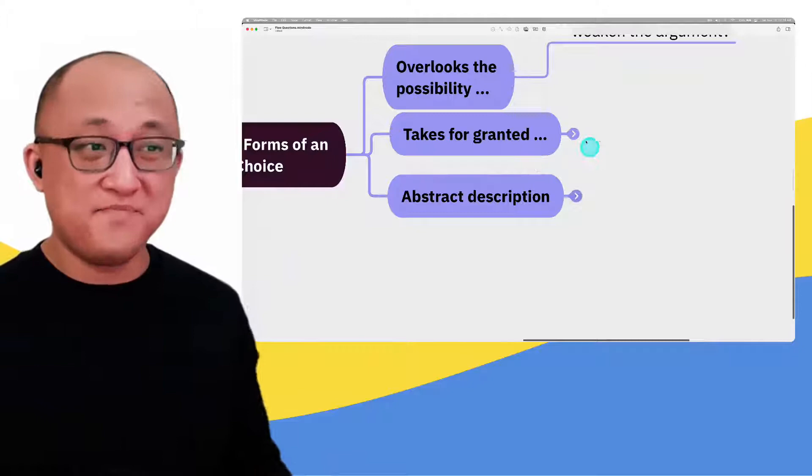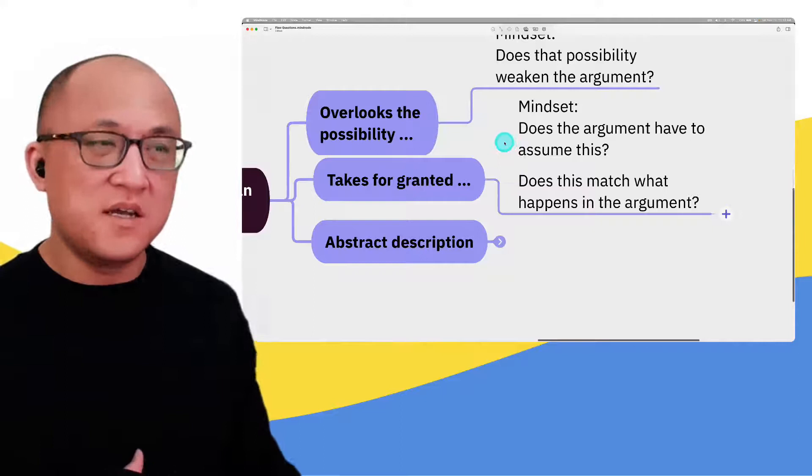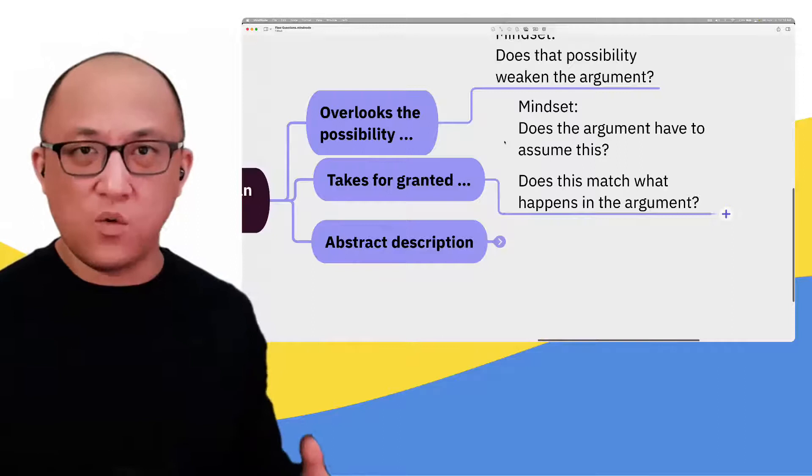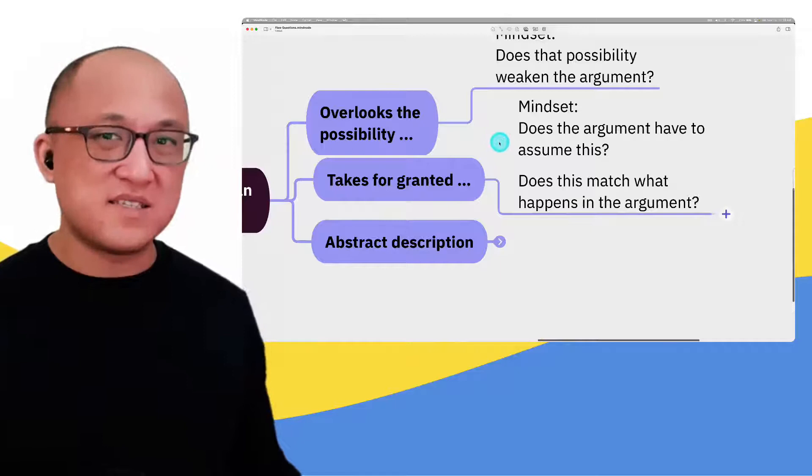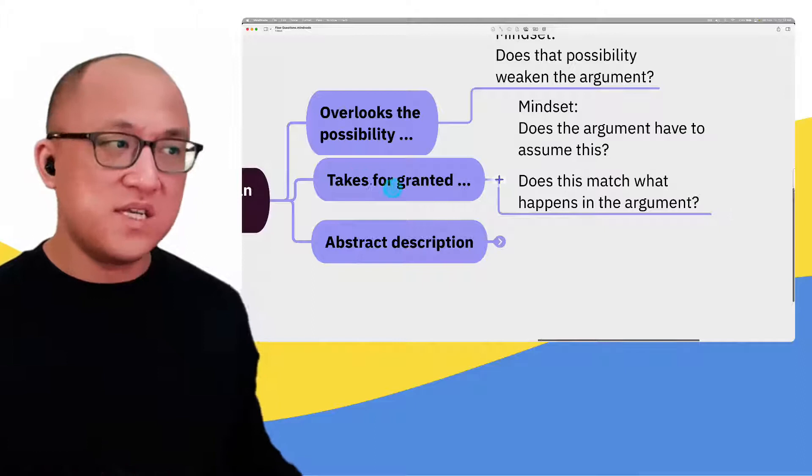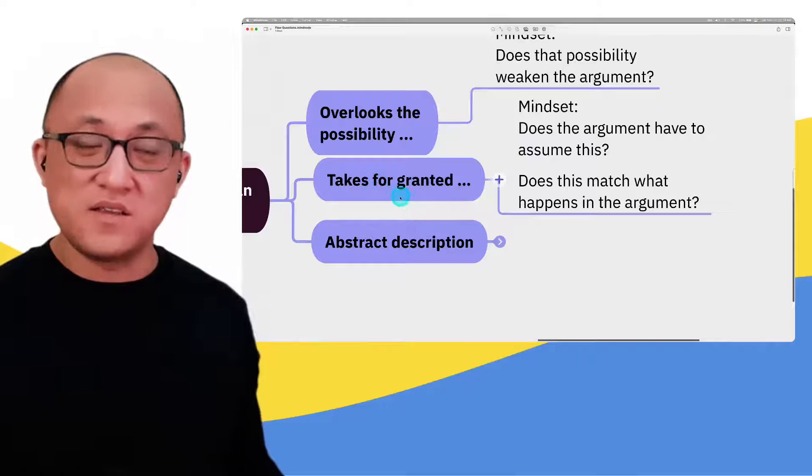The other kind of answer, 'takes for granted,' which means assumes—here are the questions I'm going to have in mind: Does the argument have to assume this? Is this a necessary assumption of the argument? Because if the argument doesn't need to assume this in order to make sense, then it's not something the argument's taking for granted. If you've studied logical reasoning and recognize necessary assumption questions, when you see an answer that says 'takes for granted,' you can employ the exact same strategies, because that's what this kind of answer is saying—this is a necessary assumption of the argument.